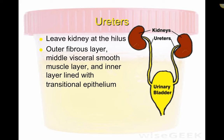That covers both the macroscopic and microscopic kidney anatomy. The key goals are to know how to label a kidney, understand the functions of its components, and be able to label the nephron. You should also know which kidney sits more cranial than the other.